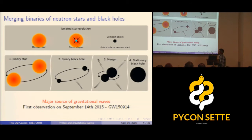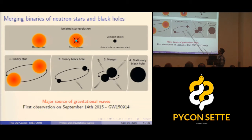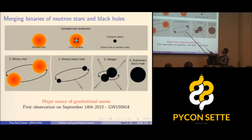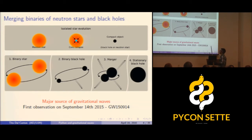Many stars in the universe come in pairs in binary orbits. If we apply this to each star in a binary, we can end up with two black holes orbiting each other. This system has all the requirements: heavy objects moving fast and accelerating in circular motion. They radiate gravitational waves, lose energy, spiral into each other, accelerate to relativistic velocities, eventually merge into a single black hole. This process is an extremely efficient radiator of gravitational waves — this is what LIGO detected in September, which I'll call GW150914.